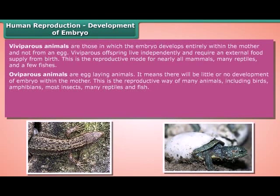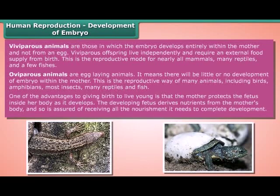Oviparous animals are egg-laying animals, meaning there will be little or no development of the embryo within the mother. This is the reproductive way of many animals, including birds, amphibians, most insects, many reptiles, and fish. One of the advantages of giving birth to live young is that the mother protects the fetus inside her body as it develops. The developing fetus derives nutrients from the mother's body and is assured of receiving all the nourishment it needs to complete development.